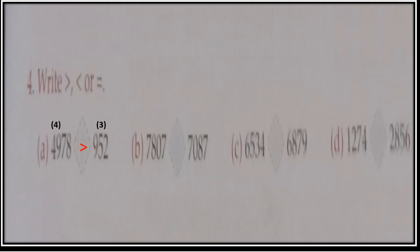Now Part B — 7807 and 7087. First compare the thousands place: both are equal. Then shift to the hundreds place. 7807 has 8 at hundreds place and 7087 has 0. Since 0 is smaller than 8, so 7807 is greater than 7087. Now Part C — 6534 and 6879. The thousands digit is the same, so compare hundreds: 5 versus 8. Since 8 is greater than 5, so 6879 is greater than 6534.